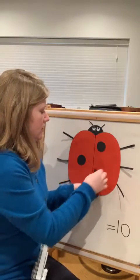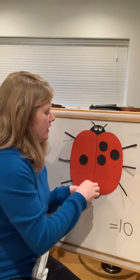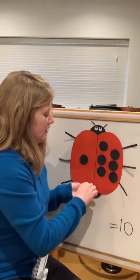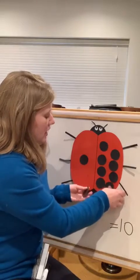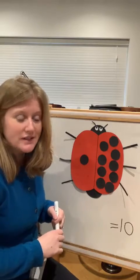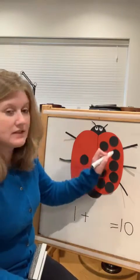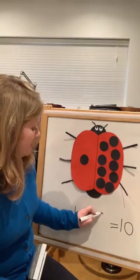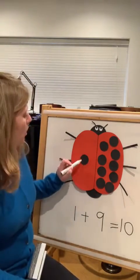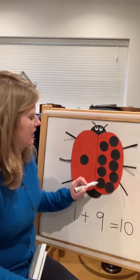So that means I need nine spots on the other side of Lucy to equal ten. Help me count: one two three four five six seven eight nine. So we've got one on this side — one plus nine equals ten altogether. Let's count and check: one two three four five six seven eight nine ten.